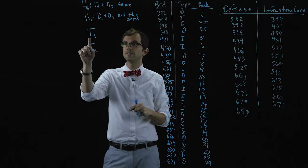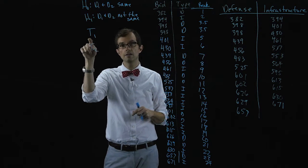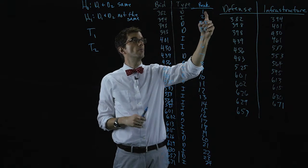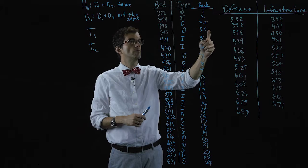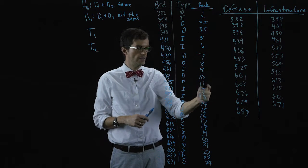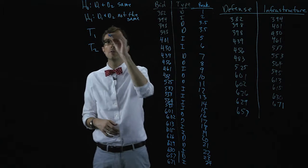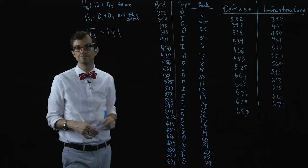So what is the sum of ranks for the defense bids? Well we would go and sum up one and three point five and three point five and seven and eight and ten and so on for all of the defense bids and if we do that we get a value of one hundred forty-one.